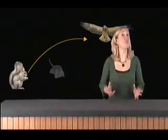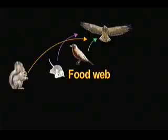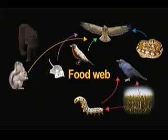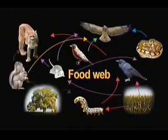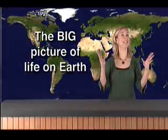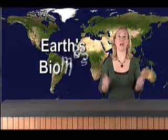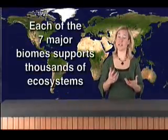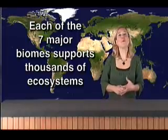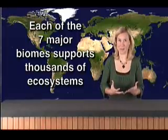You may have heard of a food web. A food web is a sort of who-eats-whom diagram for an ecosystem. We talk about food webs in another lesson. Today, we want to step back from details like food webs and ecosystems. We're going to take a look at the big picture of life on Earth, Earth's biomes. Each of the seven major biomes supports thousands of ecosystems.